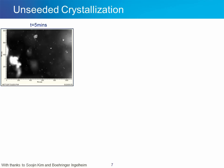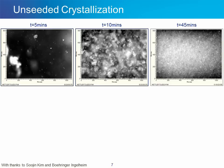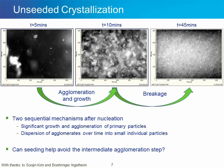For the unseeded crystallization, after five minutes we begin to see crystals forming. After 10 minutes, they've grown quite a lot, and then after 45 minutes they appear to have broken apart quite a bit and are actually much smaller. What's happening here is really a two-step process: first, agglomeration and growth of those initial crystals, followed by the breakage of those aggregates or agglomerates into a much finer crystal suspension. The question was whether seeding would actually help avoid this intermediate agglomeration step.